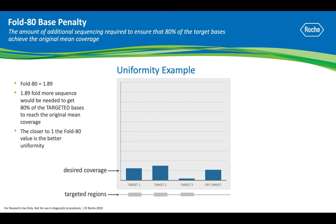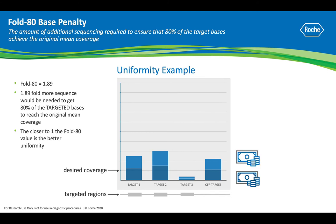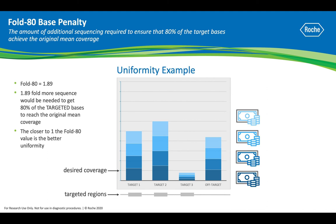This chart shows an example of what you might see from a target enrichment analysis. Here, the Fold 80 Base Penalty was calculated at 1.89, which means 1.89 times the original number of reads is needed to achieve the original mean coverage for 80% of the targeted bases. In this example, two of our target regions exceeded the desired coverage, meaning wasted sequencing resources there, and the off-target reads are also unwanted coverage and result in discarded reads. The reads with too low coverage mean you will need to sequence more to get the desired depth for every target. Depending on how low the coverage is, you might need several additional sequencing runs to reach the desired coverage, resulting in over-sequencing of other regions. Thus, achieving a Fold 80 Base Penalty value close to 1 can greatly reduce the amount of sequencing you need to achieve the desired depth of coverage across your targets.